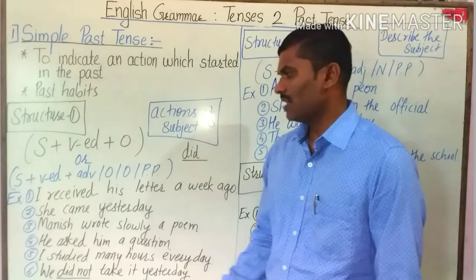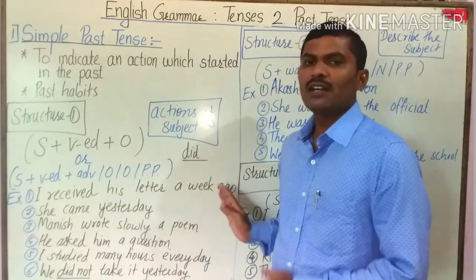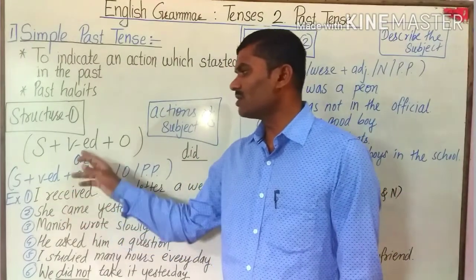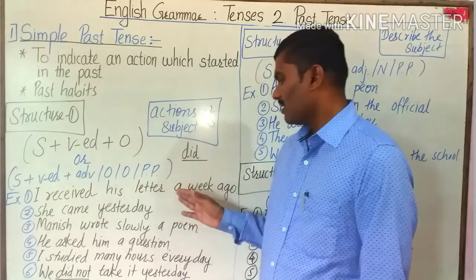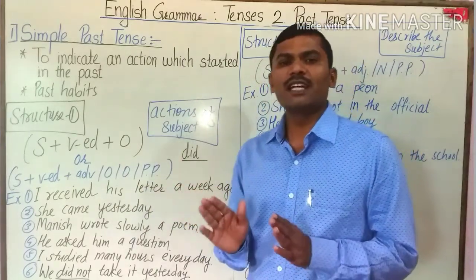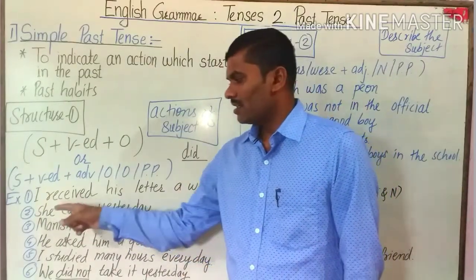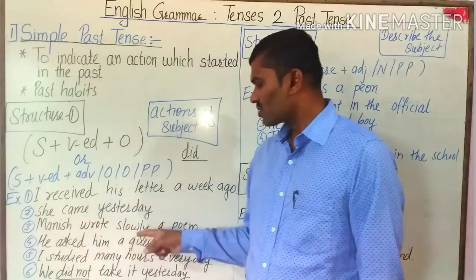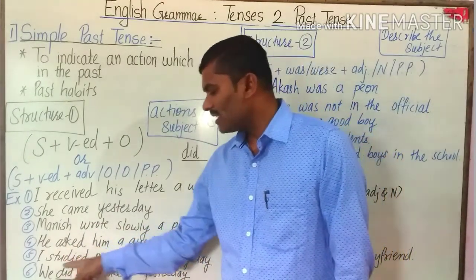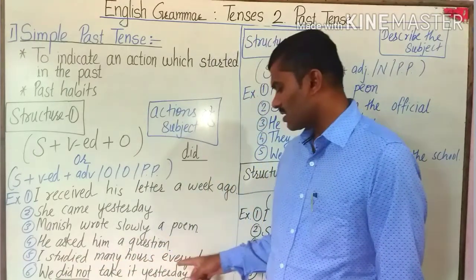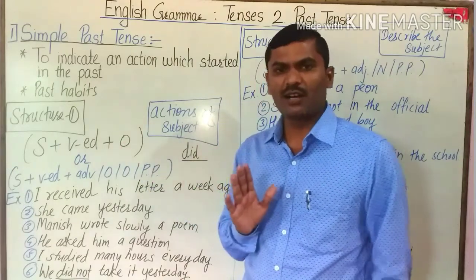Examples: 'I received his letter a week ago.' Here, 'I' is subject, 'received' is VD (past form), 'his letter' is object, and 'a week ago' shows the past action. Other examples: 'She came yesterday.' 'Manish wrote slowly a poem.' 'He asked him a question.' 'I studied many hours every day.' — this last sentence shows the past habits of the subject.